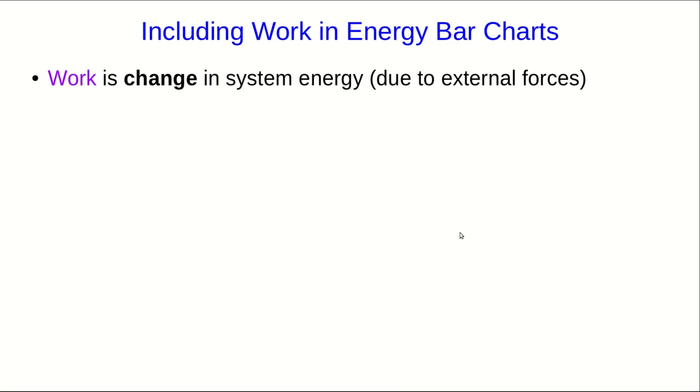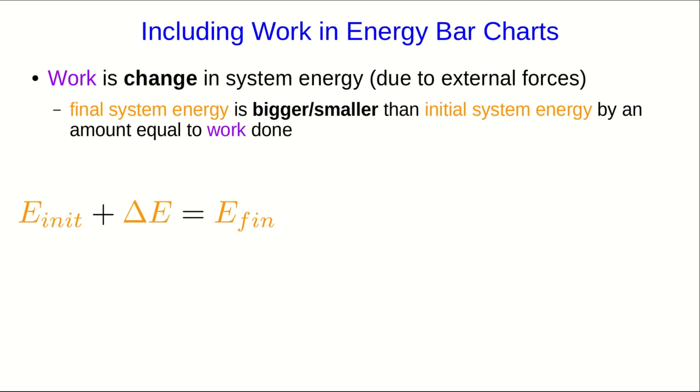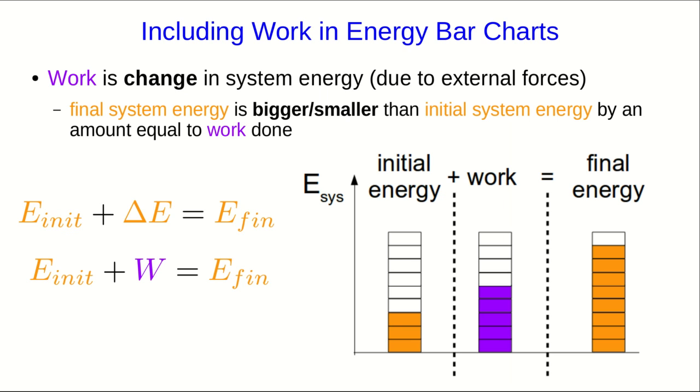It's missing the work, and the work is the change in the system energy. So in other words, the final system energy is bigger or smaller than the initial system energy by an amount that's equal to the work done. So if we can include that in the bar chart, we should have all our bars add up to the same size on both sides.